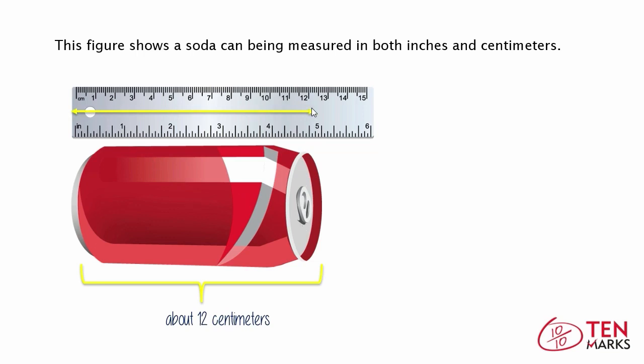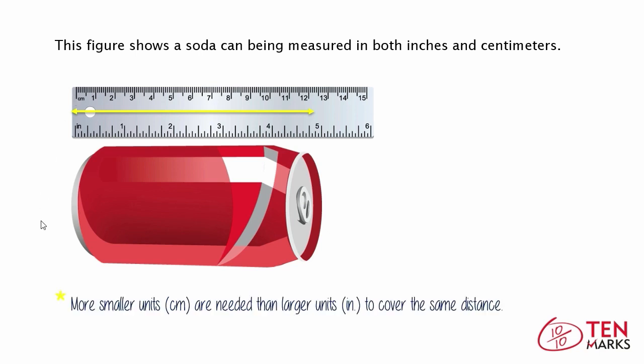This arrow helps you show that as well because the soda can ends right here. Now here's an inch, this is 1 inch, and this is 1 centimeter. You can see inches are larger units than centimeters, so there are less inches and more centimeters for the same length. This is because more smaller units are needed than larger units to cover the same distance.